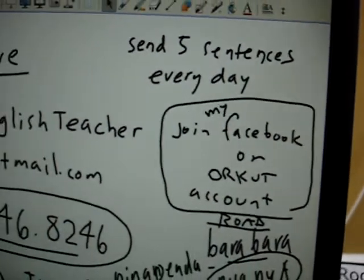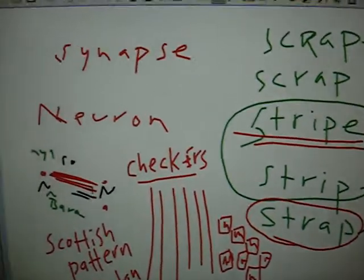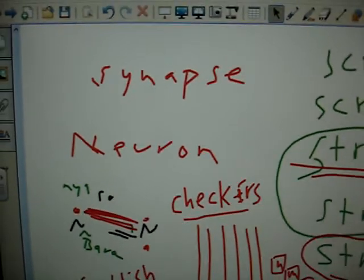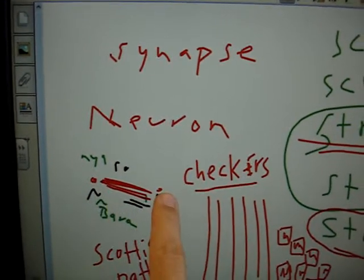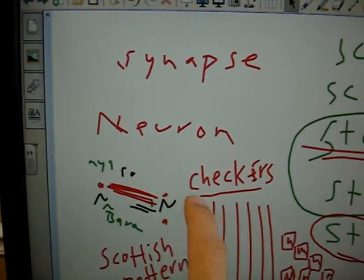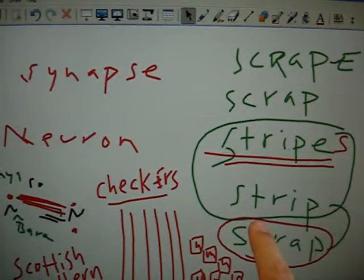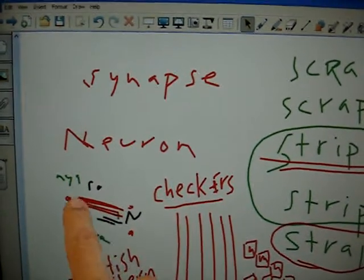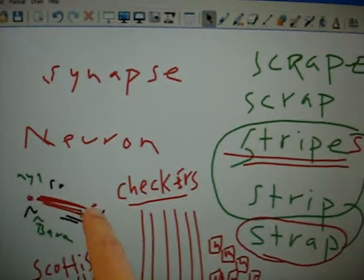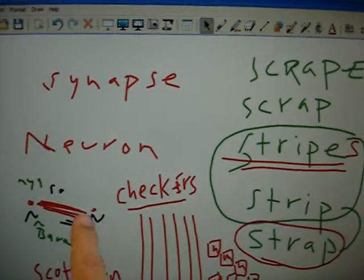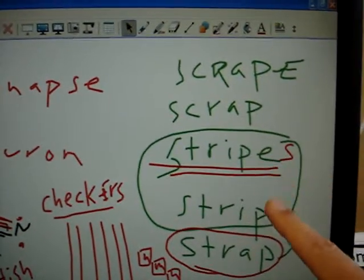We talked about synapses and neurons. Between two neurons there's a connection, and when I put in a new word like 'checkers,' or we get this confusion between 'stripes' and 'strip,' that builds one connection. If you hear me talk about it, that's another connection, and if we talk about it again, that's another connection. So there are lots of connections being made.